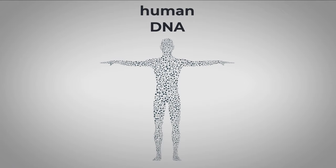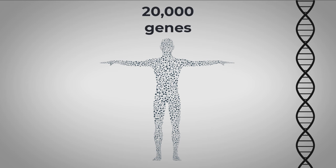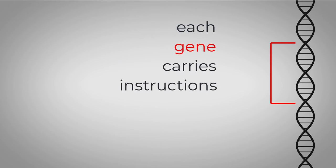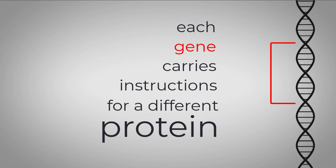Human DNA has about 20,000 different genes, and each of those genes carries the instructions for a different type of protein.